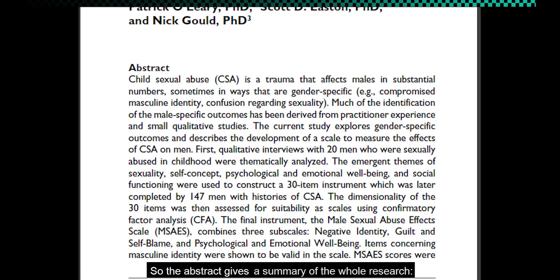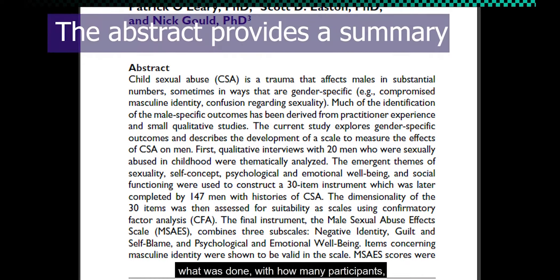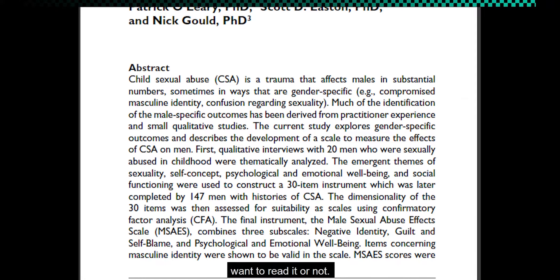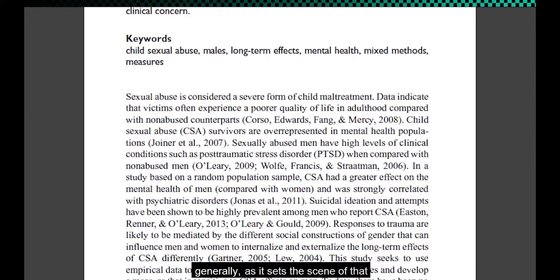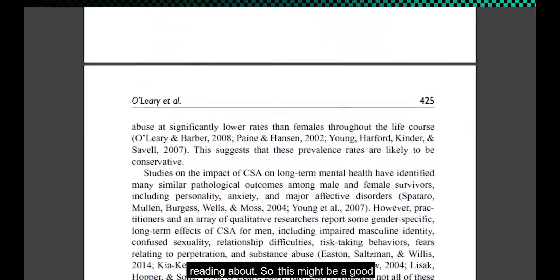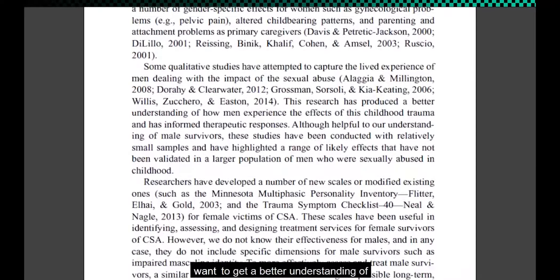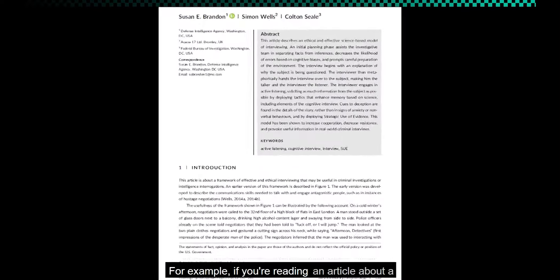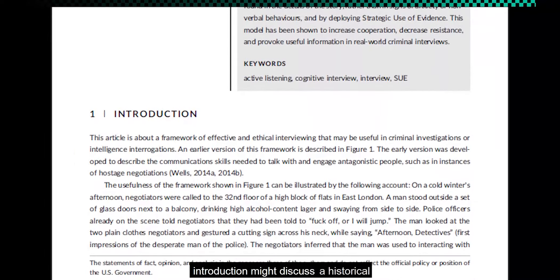The abstract gives a summary of the whole research — what was done, with how many participants, what was measured, and what was found. The abstract helps you decide whether the article is relevant to what you would like to know about, and whether you might want to read it or not. The introduction gives a good overview of the field more generally, as it sets the scene of that particular topic of research you're reading about. For example, if you are reading an article about a particular interviewing technique, the introduction might discuss a historical perspective of how interviewing in the police evolved, which could be very interesting for you to know about.